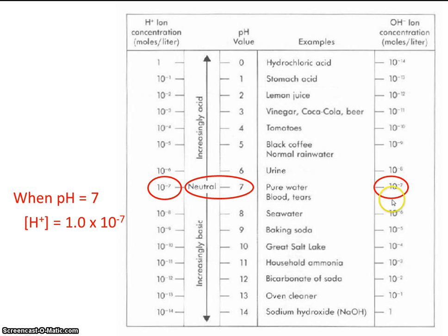Similarly, the concentration of hydroxide ion is the same thing. It's 10 to the minus 7th. So in a neutral solution, the amount of hydrogen ion and hydroxide ion are equal to each other.